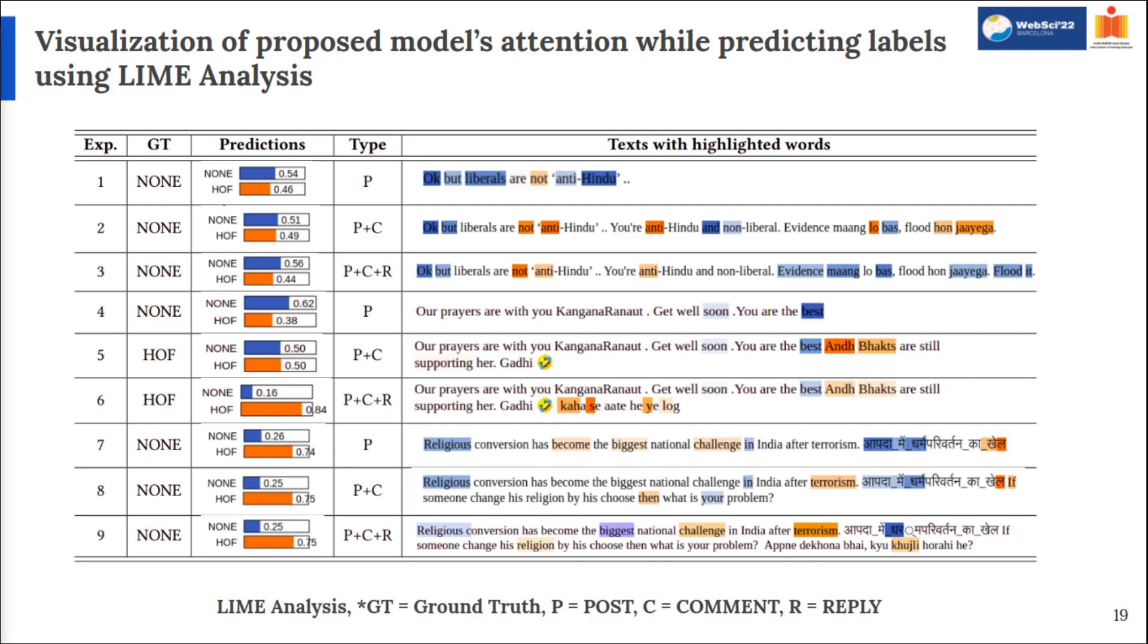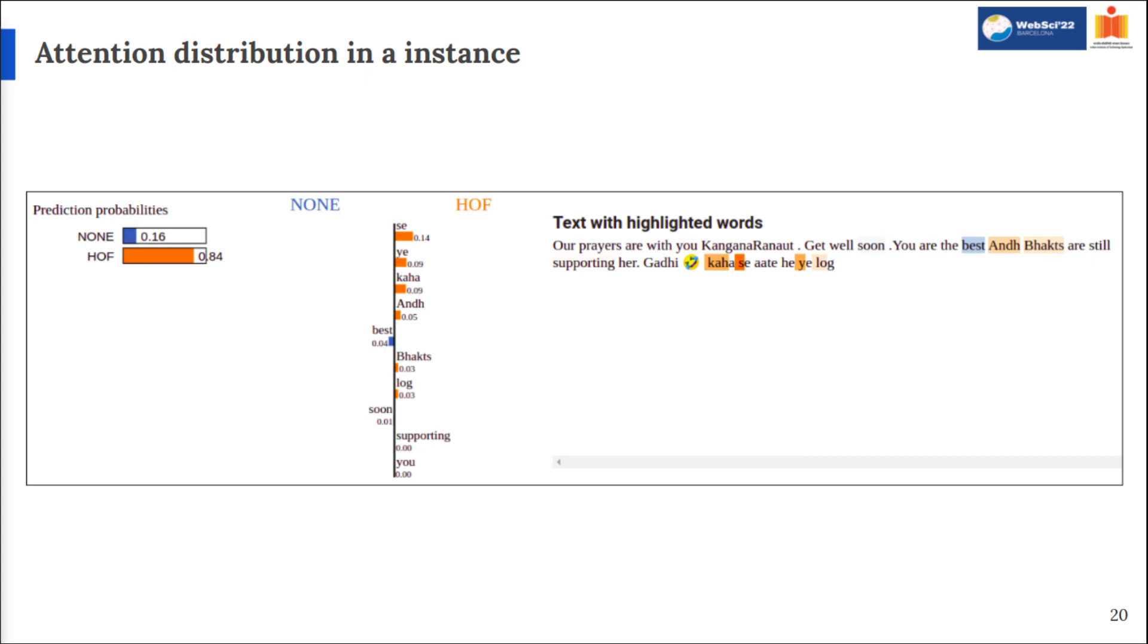We performed LIME analysis to see model's attention while predicting labels. The words in the orange color are words that are viewed as HOF by the model and the words in the blue are viewed as neutral or positive. The table entry shows how attention for different words influence the prediction. A specific instance is shown in the next slide. The instance shows that model is giving a positive score for the word best, whereas it is giving andh and bhakt a negative score. The overall prediction for label of a sentence is cumulative effect of each word score.